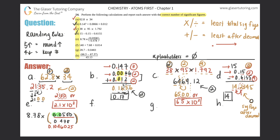For 0.0500: leading zeros don't count, but the trailing zeros do count because there's a decimal — so that's three sig figs. For 0.478: the leading zero doesn't count, and 478 gives three sig figs. The answer should have three sig figs: 104, and the next digit rounds up, giving 0.105.